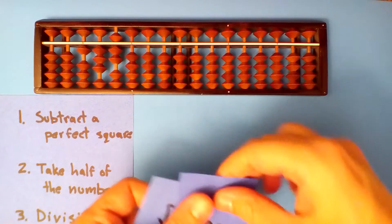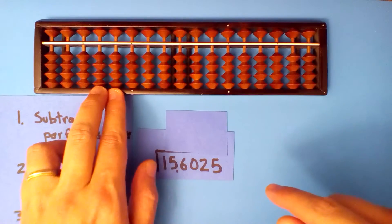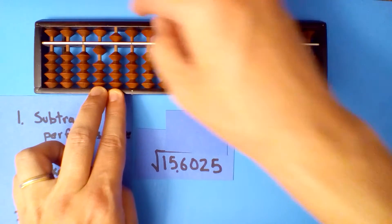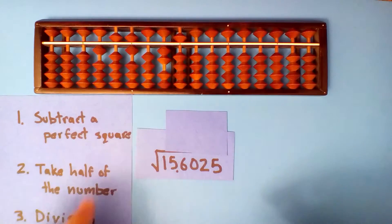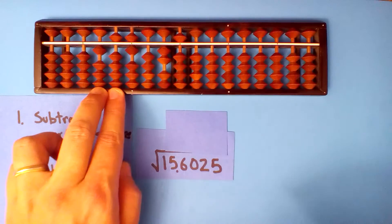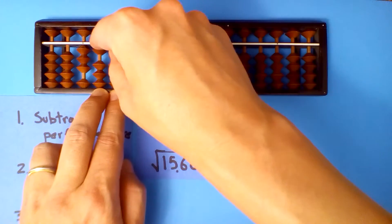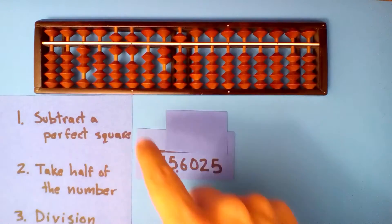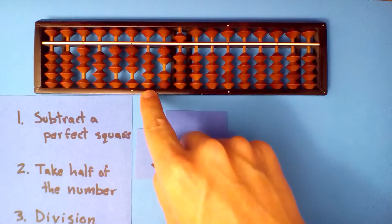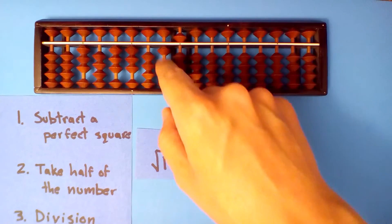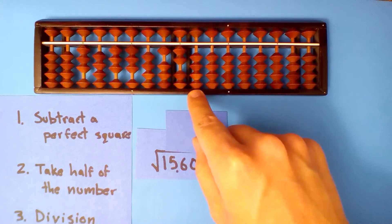The square root of 15.6025. Here's our tens and ones — one five — and the decimals 6, 0, 2, 5. Subtract a perfect square: four squared is too much, so three squared will be okay. Three, and subtract three times three. Take half of what's left. Half of 6 is 3. Half of 6 is 3. Half of 0 is 0. Half of 2 is 1. Half of 5 is 2 with one left over. Half of 10 is 5.